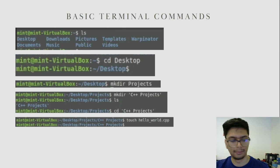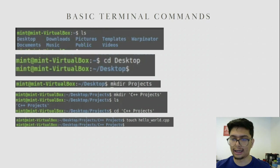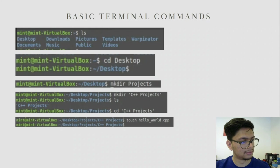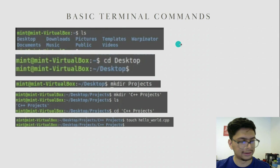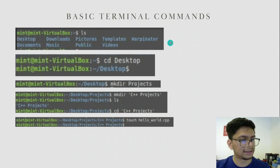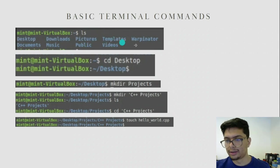Now I'm going to introduce you to some basic terminal commands. What does ls do? The ls command shows you all the files in the current directory. For example, if I'm in the topmost directory in Linux — which is tilde (~) — and I type ls, you can see the files currently in that directory: Desktop, Downloads, Pictures, and so on.